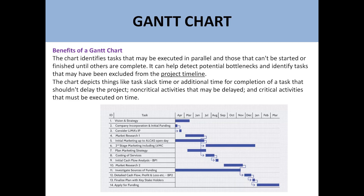The Gantt chart tells you about the activities which, if delayed, will cause the overall project to be delayed. For example, if market research 2 is delayed, then other activities like detailed cash flow and profit and loss will also be delayed. Activities whose delay causes the project timeline to be delayed are called critical activities, while activities which can be delayed without delaying the project are called non-critical activities.